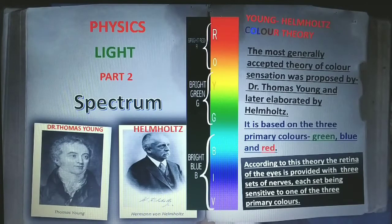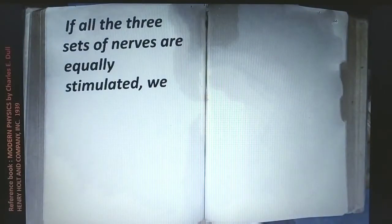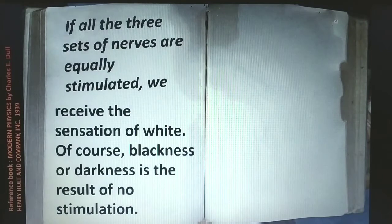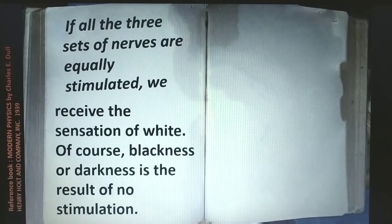According to this theory, the retina of the eye is provided with three sets of nerves, each set being sensitive to one of the three primary colors. If all three sets of nerves are equally stimulated, we receive the sensation of white. Blackness or darkness is the result of no stimulation.